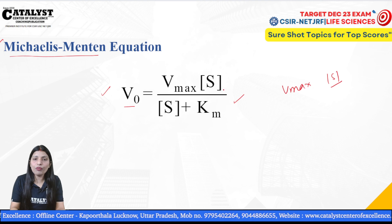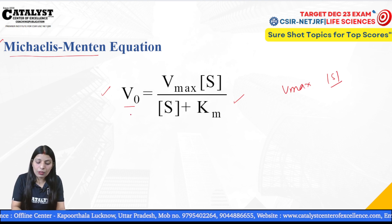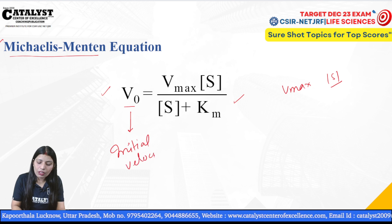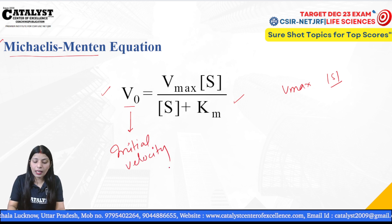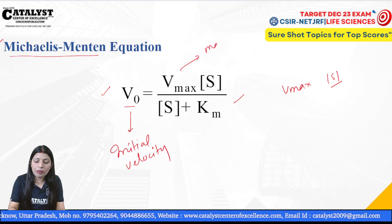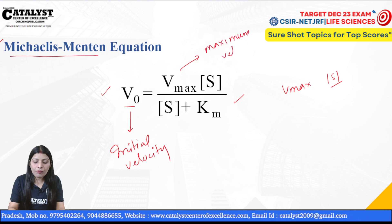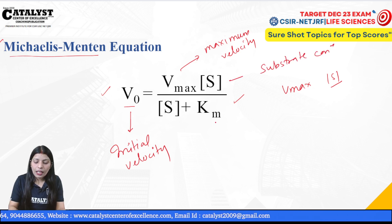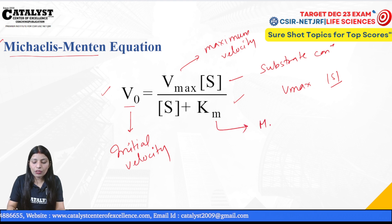The equation is: V0 equals Vmax times S divided by S plus Km. Here V0 represents the initial velocity, Vmax represents the maximum velocity, S is the substrate concentration, and Km is the Michaelis-Menten constant.